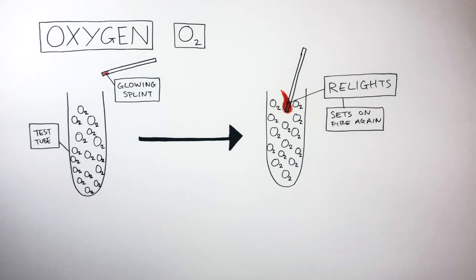We can use the fire triangle to understand how this took place. The fire triangle tells us for something to set on fire, we need a fuel, we need heat, and we need oxygen. In this case, we had the glowing splint, which provided the heat and the fuel, and then the pure oxygen allowed the glowing splint to set on fire again.